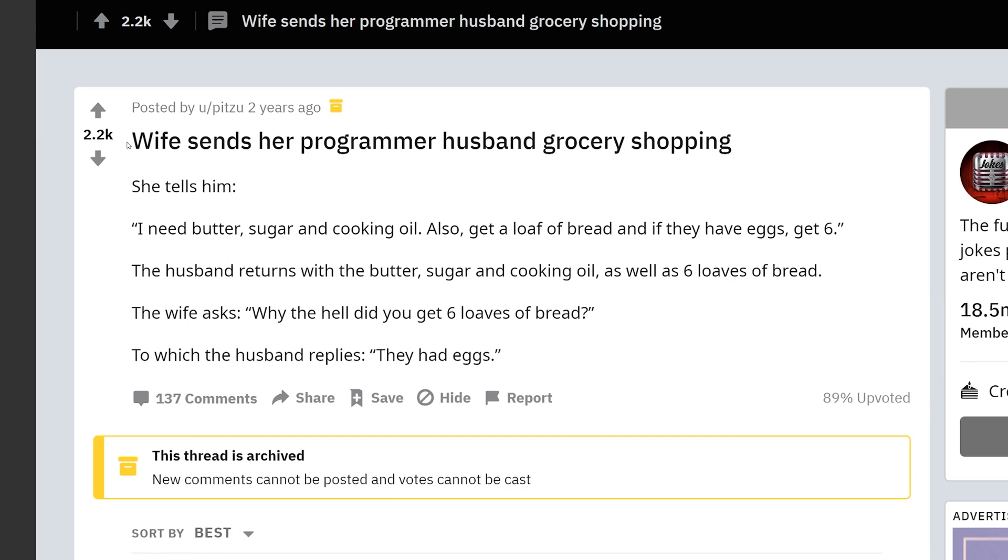So the joke is, wife sends her programmer husband grocery shopping. She tells him, I need butter, sugar, and cooking oil. Also, get a loaf of bread. And if they have eggs, get six. And then the husband returns with butter, sugar, cooking oil, as well as six loaves of bread. And then the wife asked, why the hell did you get six loaves of bread? To which the husband replies, they have eggs.